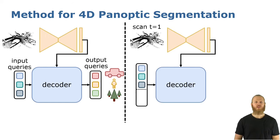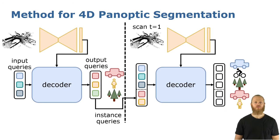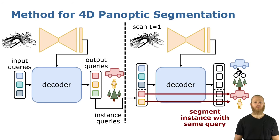For the next scans, we are now tracking instances using our queries. As input we use the learnable queries, but we also concatenate the queries as segmented instances in the previous scan — like the red query for the red car. This allows us to perform tracking when segmenting the next scan, because the same query always segments the same instance over time.